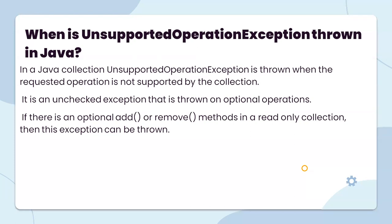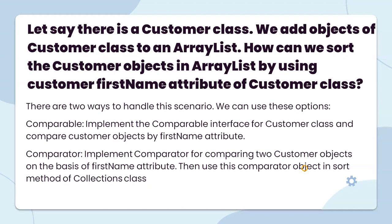When is UnsupportedOperationException thrown in Java? In Java collections, UnsupportedOperationException is thrown when the requested operation is not supported by the collection. It is an unchecked exception thrown on optional operations. For example, if an add or remove method is called on a read-only collection, this exception can be thrown.